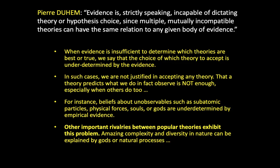Pierre Duhem from the early 1900s makes the case that evidence is, strictly speaking, incapable of dictating theory or hypothesis choice, since multiple mutually incompatible theories can have the same relation to any given body of evidence. When evidence is insufficient to determine which theories are best or true, we say that the choice of which theory to accept is underdetermined by evidence. In such cases we are not justified in accepting any theory. That a theory predicts what we do in fact observe is not enough, especially when other theories predict the same outcomes. For instance, beliefs about unobservables — such as subatomic particles, physical forces, souls, or gods — are underdetermined by empirical evidence.